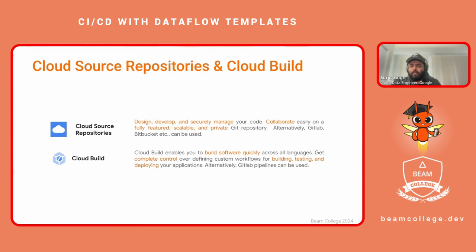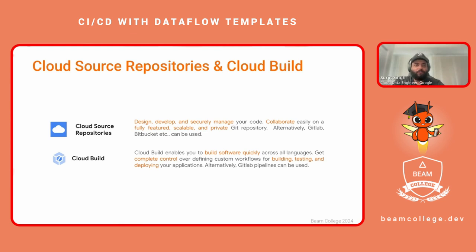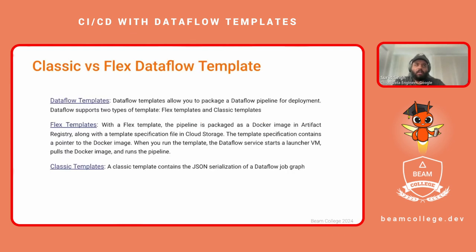Similar to Cloud Build, there are alternatives like GitLab pipelines and GitHub Actions. For the sake of simplicity, I'll be using GCP services for now. Let's talk about the different types of Dataflow templates.